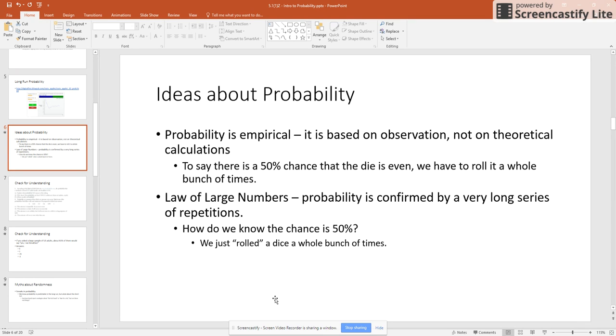Now that could have been done via simulation. You don't have to physically roll the die. You could have run a computer program for it. But it was rolled a whole bunch of times. And so that's how we're able to confirm our probability there.